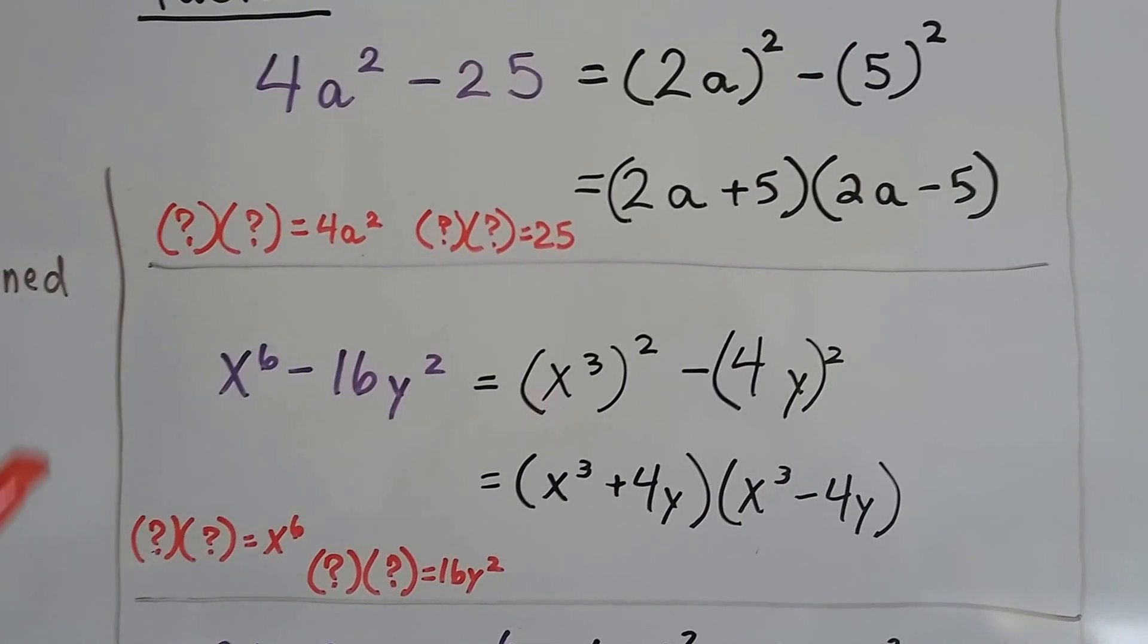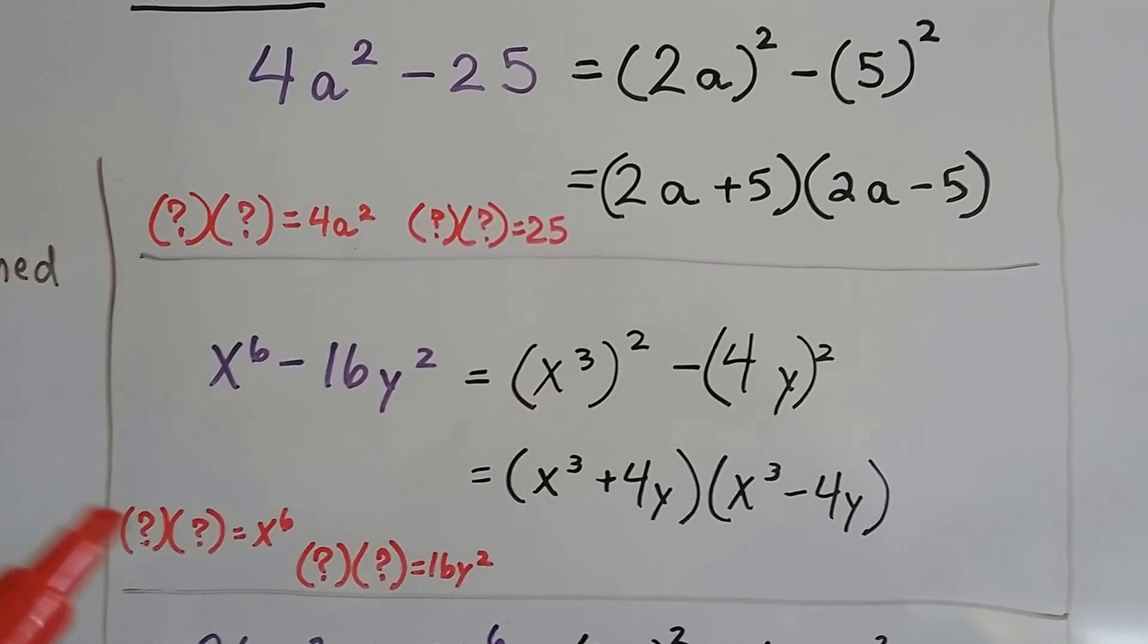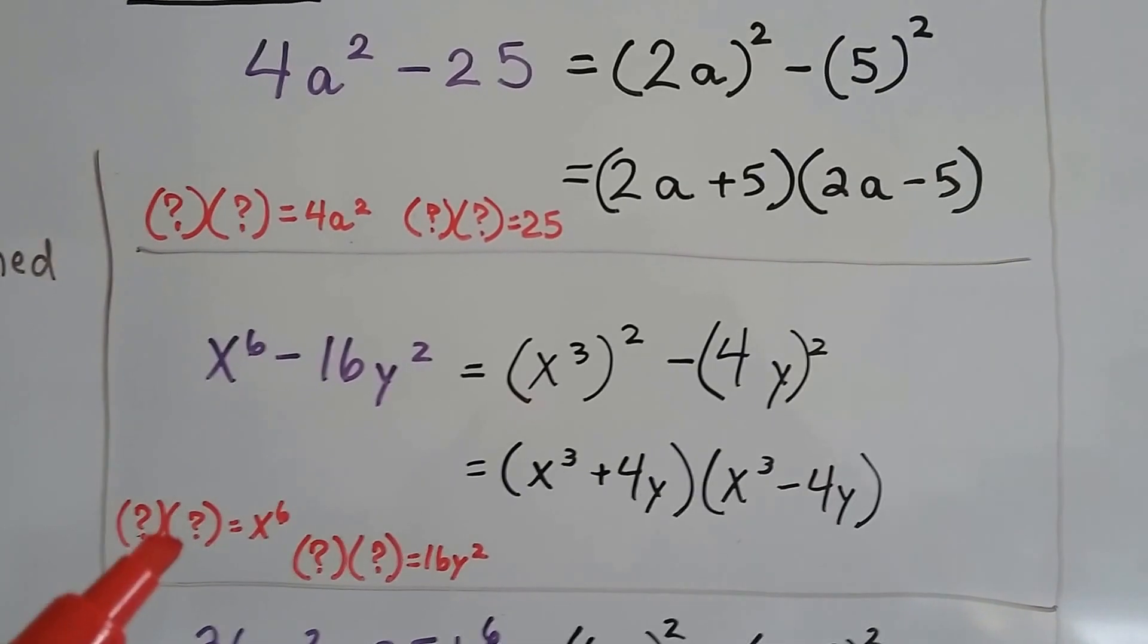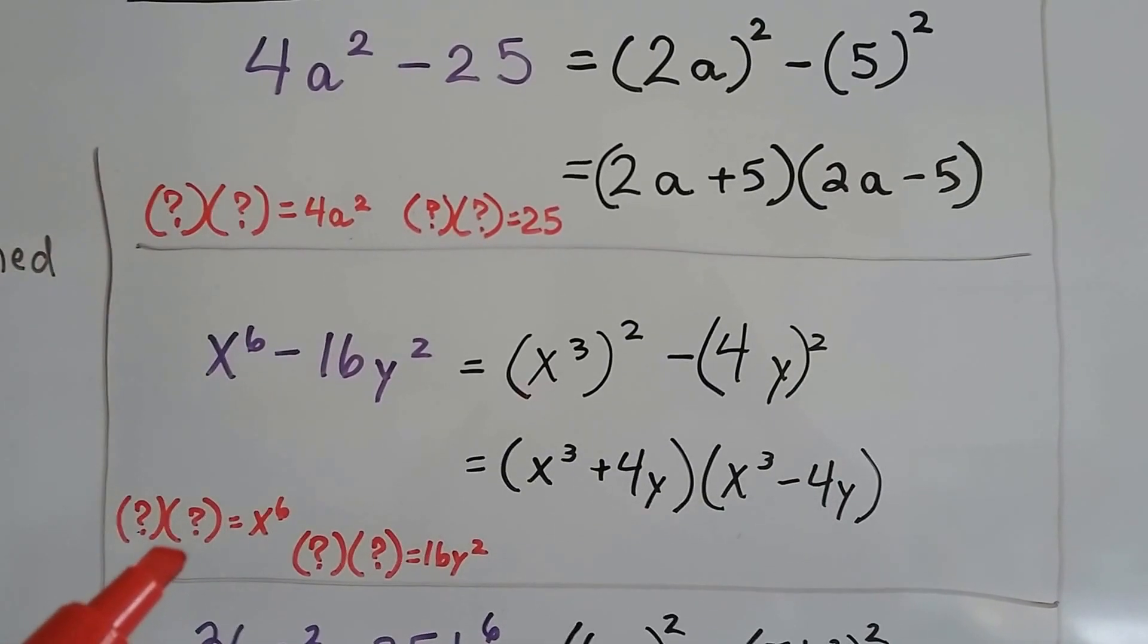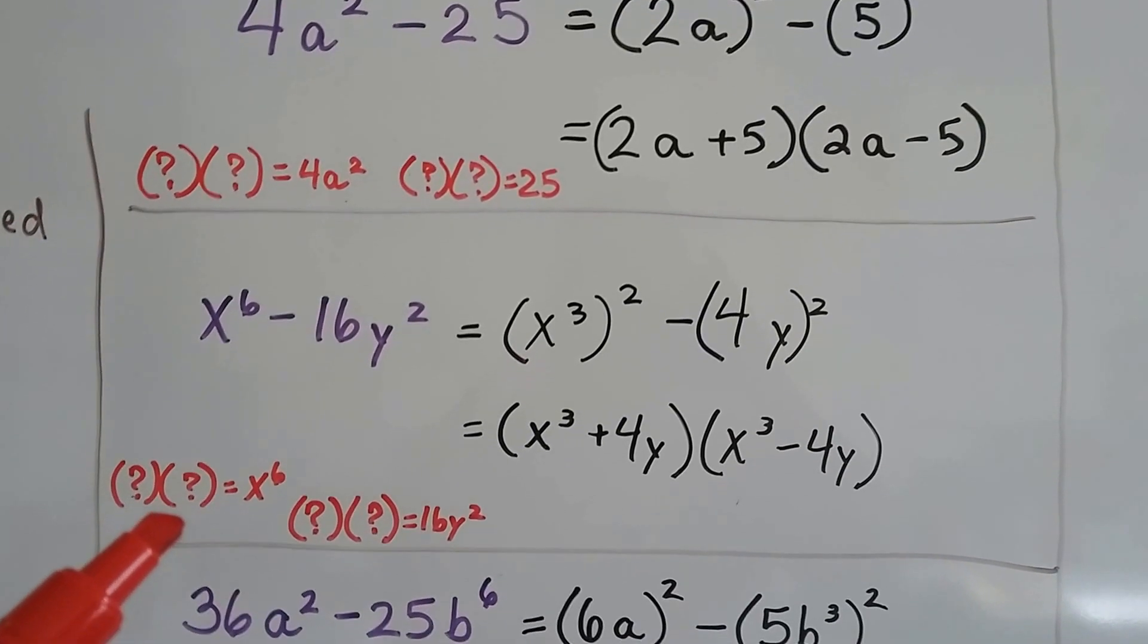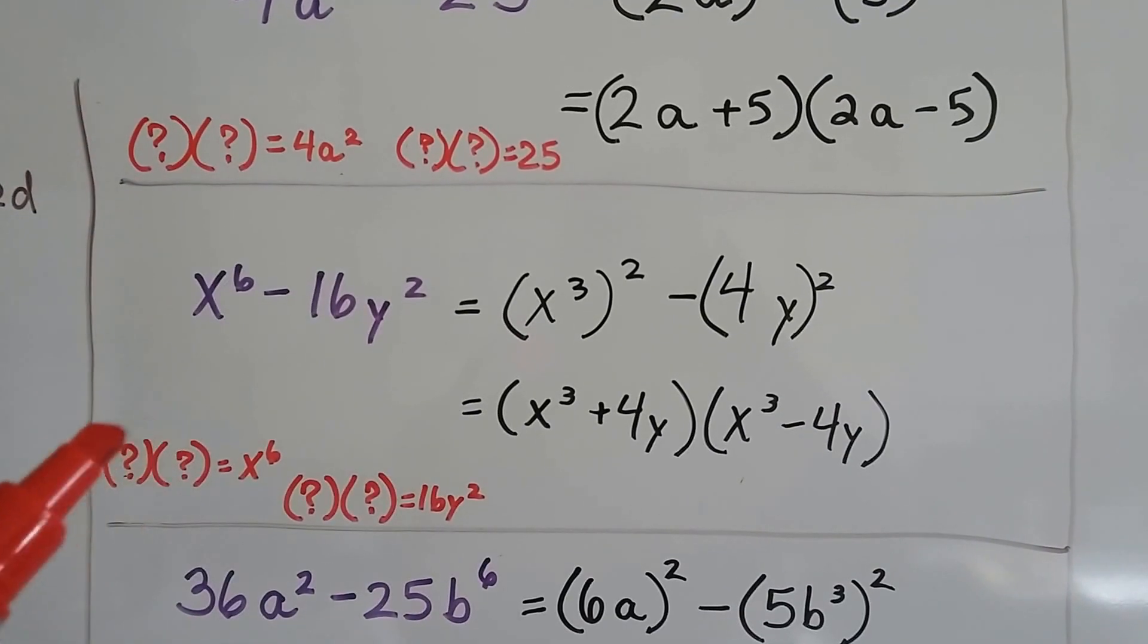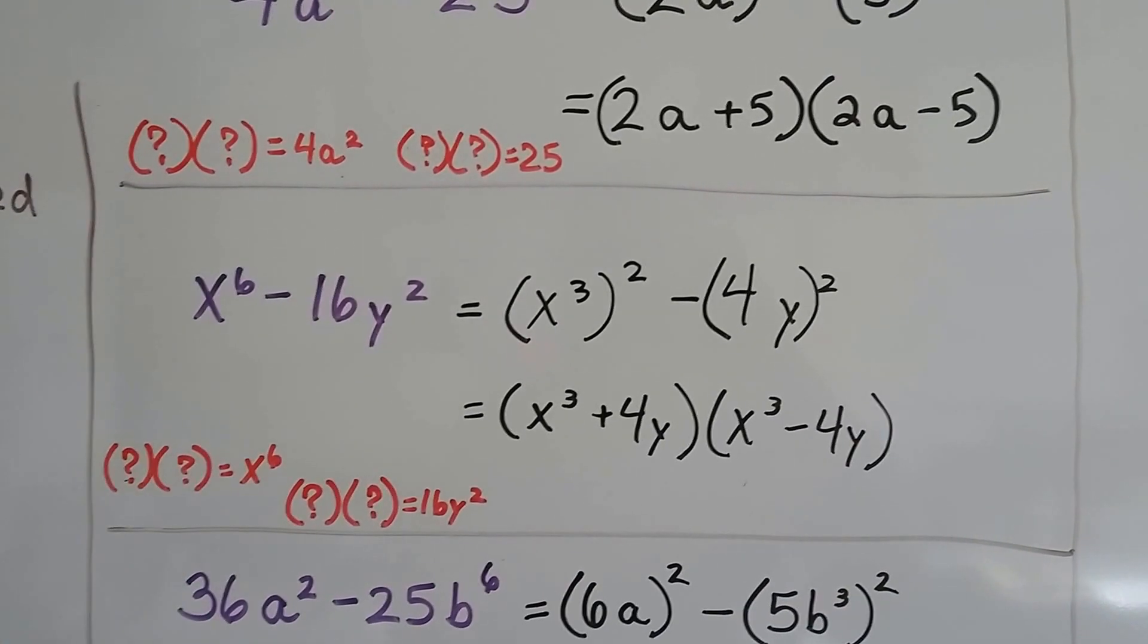Let's do a harder one. Now we've got x^6 minus 16y². We have to ask ourselves, what times what equals x^6? Remember, the product rule of exponents says we add exponents. If this were x³ and that were x³, we could add the 3 and the 3 exponents to get that 6.